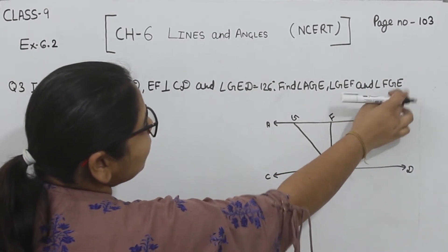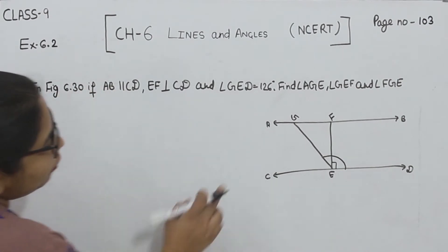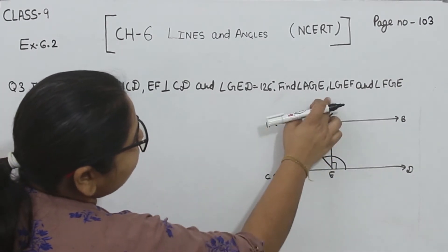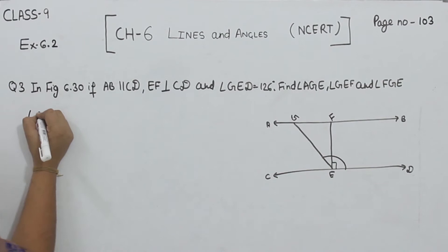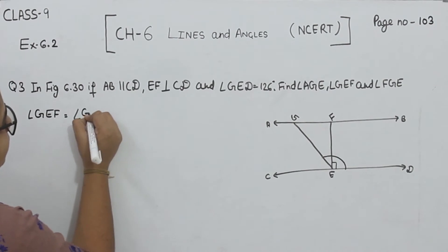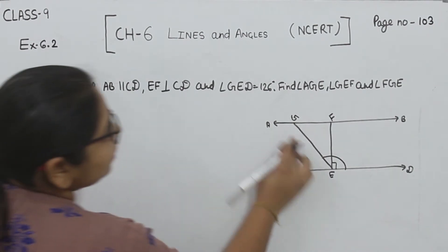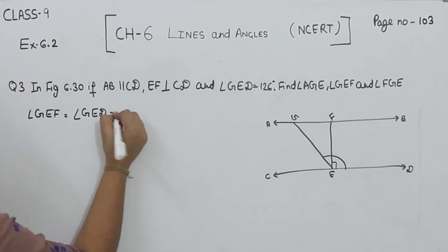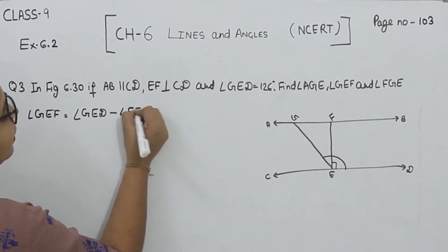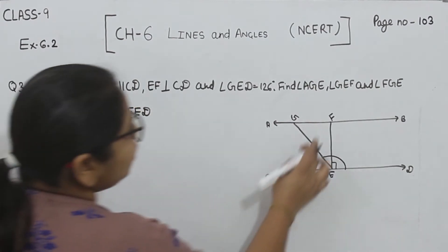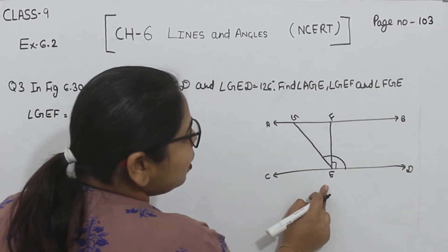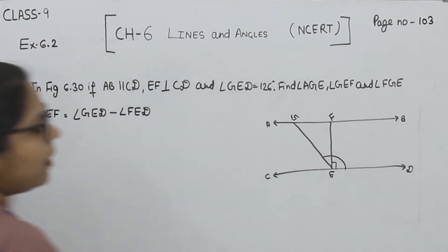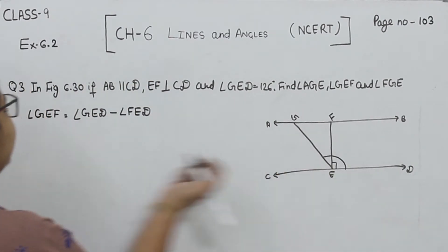Now for angle GEF, angle GEF equals angle GED minus angle FED. As we know that this is perpendicular, so this is a right angle, so this angle is 90 degrees.